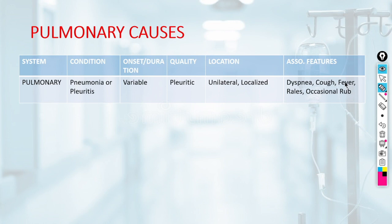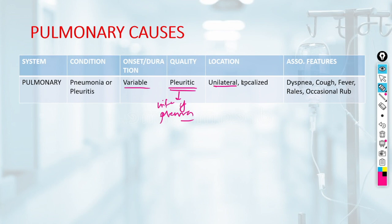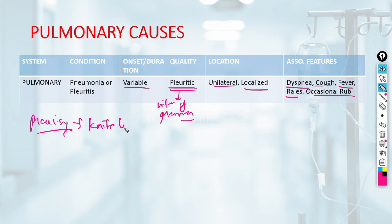Pulmonary causes of chest pain: pneumonia or pleuritis causes variable onset pleuritic pain due to inflammation of the surrounding pleura. It is typically unilateral on the side of pneumonia or pleuritis, well localized. Associated features include dyspnea, cough, fever, and on auscultation, crackles and occasional rub. Pleurisy refers to a knife-like sharp pleuritic pain that increases on inspiration.